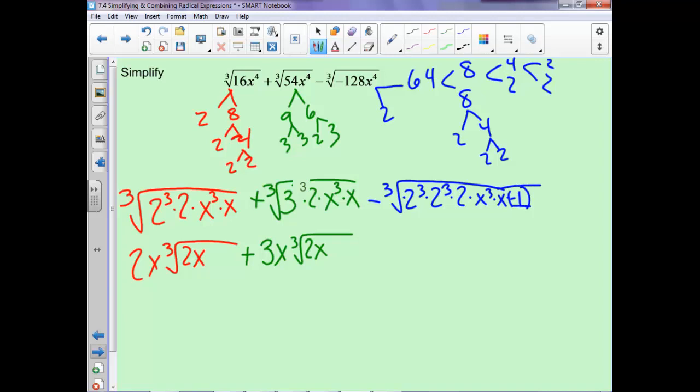Now when we have the cubed root of negative 1, it's a negative, so that will cancel with this negative. And then we'll have 4x cubed root of 2x. Now notice they all have this x cubed root of 2x. So since those are all the same, they are like terms. So we'll have 2 plus 3 plus 4 is 9x cubed root of 2x.